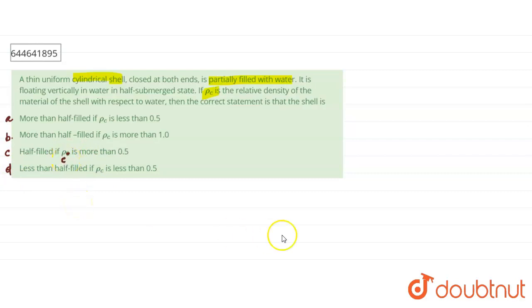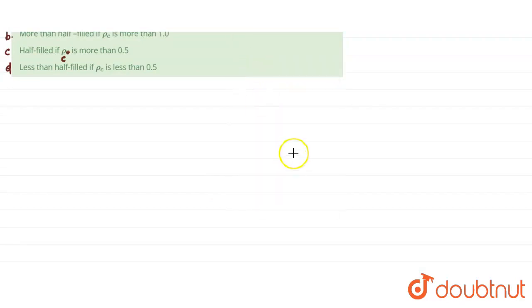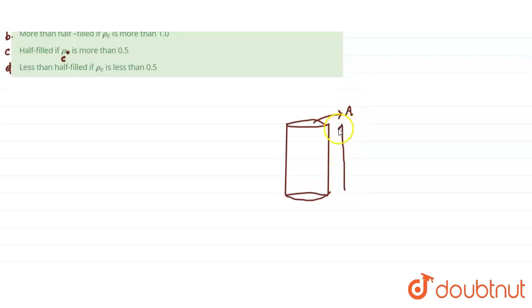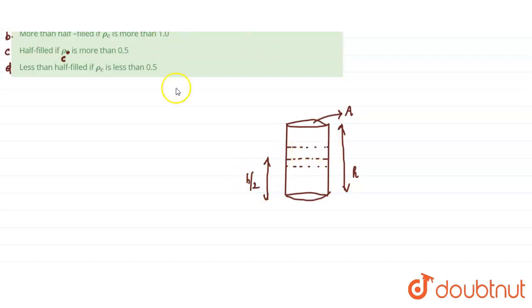First of all, we can draw the diagram for the cylinder. Let the area of cross-section of the cylinder be A and the total height of the cylinder be H. The cylinder is submerged up to a height H/2. Let the level of water inside the cylinder be raised up to a height H-dash.